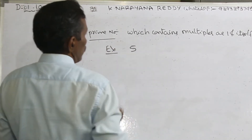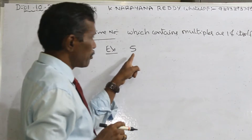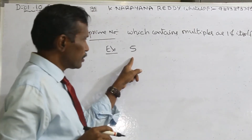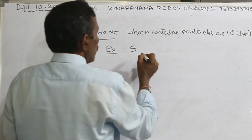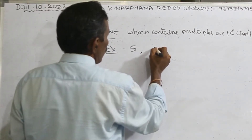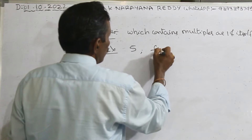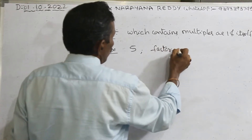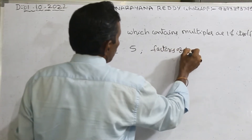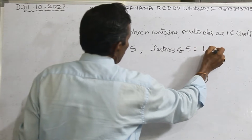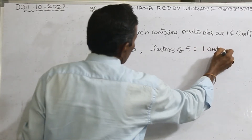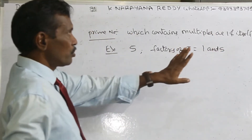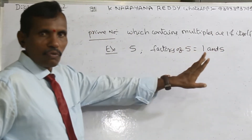For example, take 5. This is a prime number, or prime digit. What are the factors of this? Factors of 5 are 1 and 5 — one and itself. Those are the factors of 5. Only 2 factors.